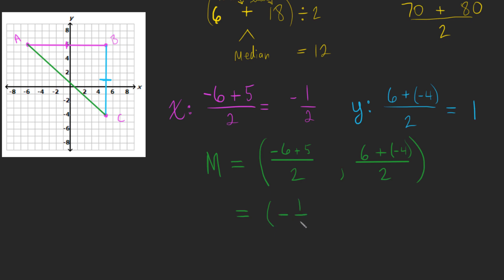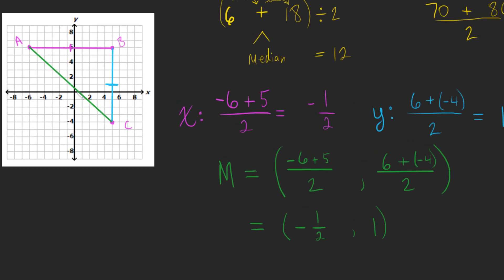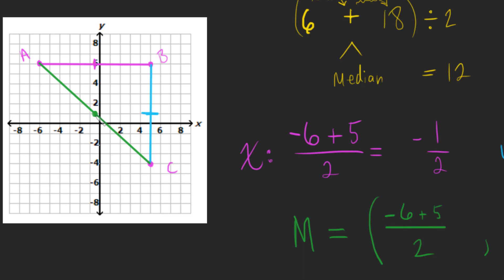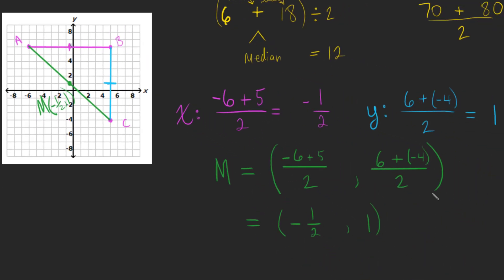It's at negative 0.5 or negative a half and one positive one. And that would be the midpoint on that green line and negative a half and one right in there. So we could label that if we wanted to as M, negative a half, one. And that's it. That's the midpoint of a line segment.